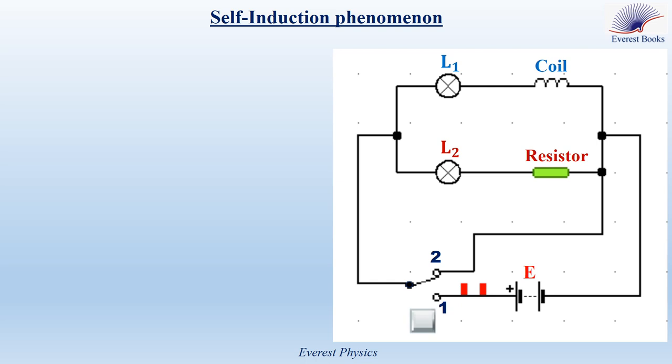L1 and the coil are connected in series, whereas L2 and the resistor are connected in series. Let's start the animation by turning the switch to position one. When I start the animation, look carefully to compare the brightness of the two lamps.